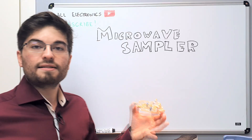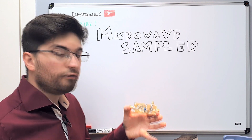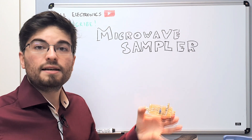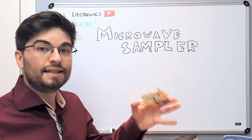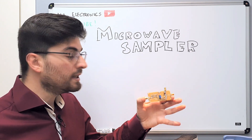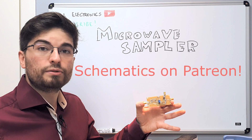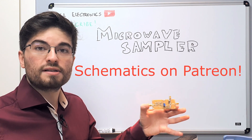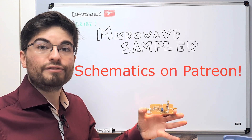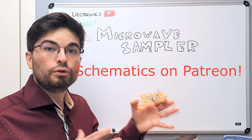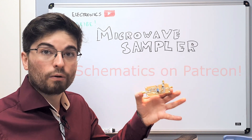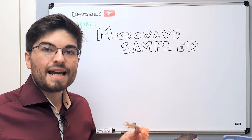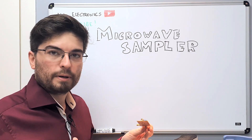I designed this microwave sampler for our 10 GHz source project. This is the sampler that we use to down-convert the signal of the VCO to close the loop on the PLL. And what is the idea of a sampler?